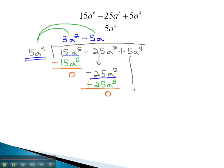Finally, bring down the last term, 5a to the 4th, and repeat the process one last time. Dividing 5a to the 4th by 5a to the 4th will give us positive 1.